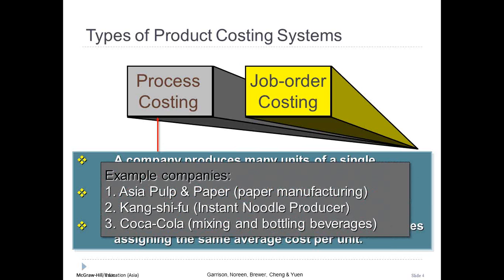An example of a company that may use a process costing system is Asia Pulp and Paper, a manufacturer of paper products. Paper manufacturing involves continuous production of a single roll of paper that may eventually be cut into sizes needed by customers. Other companies that would benefit from process costing are Kong Shifu, Coca-Cola, Pepsi, and Nestle — all producing consistent, standardized products. For example, Coca-Cola bottled in California should taste identical to the same Coca-Cola bottled in New York City.